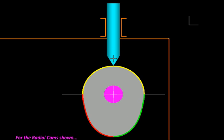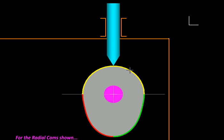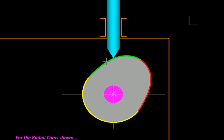You would see this knife edge follower is rising on the green portion, returning on the red portion and just staying in its own place in the yellow portion.